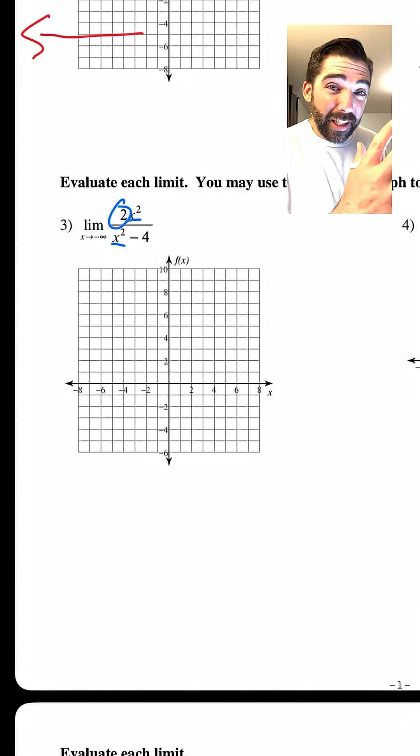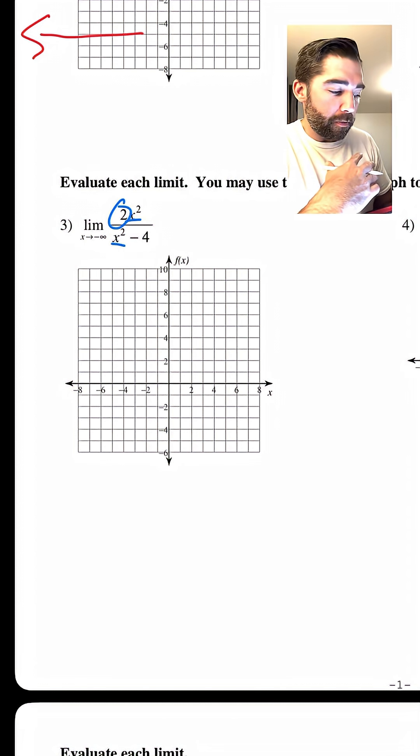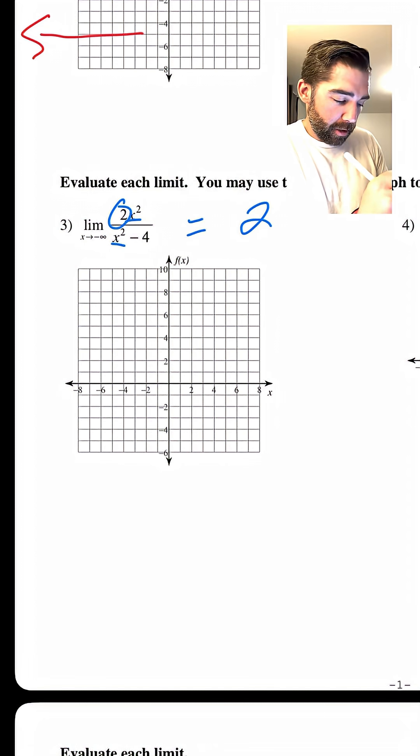So really, as long as our exponents are the same, you can just take the coefficient. That is, as we approach infinity or negative infinity, that is going to be our answer. So here, easy answer is two.